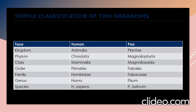Here is a simple classification comparison of two organisms: human and pea. Human's kingdom is Animalia, pea's is Plantae. Phylum: Chordata (human), Magnoliophyta (pea). Class: Mammalia (human), Magnoliopsida (pea). Order: Primates (human), Fabales (pea). Family: Hominidae (human), Fabaceae (pea). Genus: Homo (human), Pisum (pea). Species: Homo sapiens (human), Pisum sativum (pea). Every organism has a different kingdom, phylum, class, order, family, genus, and species.